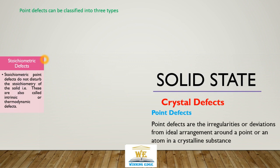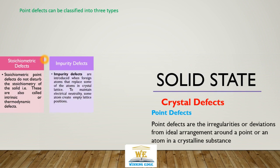This is about stoichiometric defects. Defects introduced by the addition of impurities in solid crystals: when we introduce a foreign material in a crystal, some of the atoms are replaced to maintain electrical neutrality. Some atoms create empty space lattice positions, in case the charge is imbalanced by the addition of impurity.